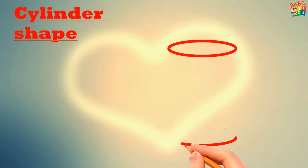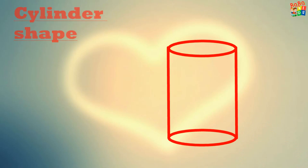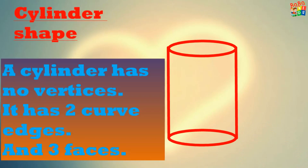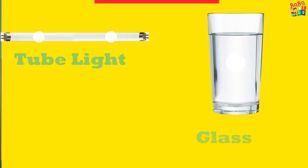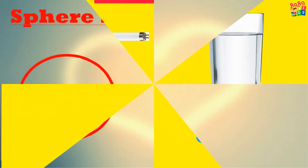Now the next shape is cylinder. This is a cylinder shape. A cylinder has no vertices. It has two curved edges and 3 faces. Look here children — this tube light and this glass are cylinder shapes.